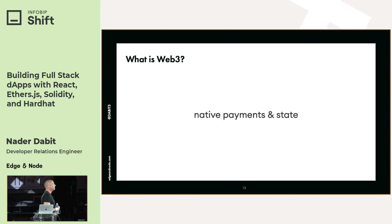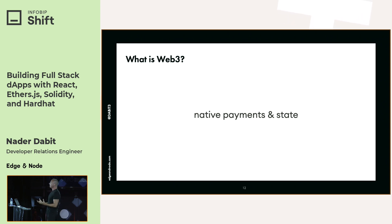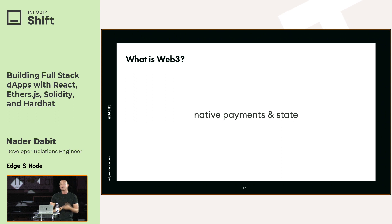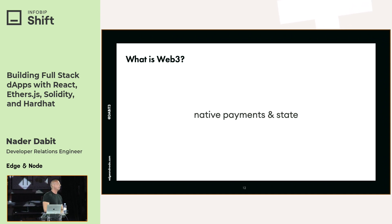But there are a couple of pieces of key functionality that were not included in the early Internet: native payments and native state. To get around this, we've created some of the most complex and brittle systems in the entire world. When you think about native payments — what does it take for someone living in the US to send money to someone in South America? They both need an ID, a bank account, an email address, and then PayPal or Stripe. It's a huge, overly complex piece of infrastructure glued together by many parties.